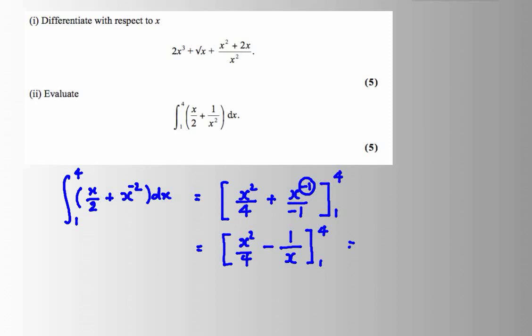So, working this out, what I have, I substitute 4 in, and I substitute 1 in, I subtract, and I will have my answers. And that should give me, I think, in the end, 4 plus 1 is 5, minus 1 quarter, minus 1 quarter, that should give me 4 and a half. And that is my integration done.